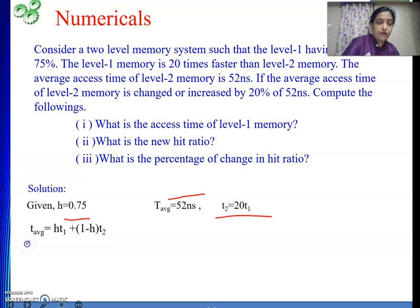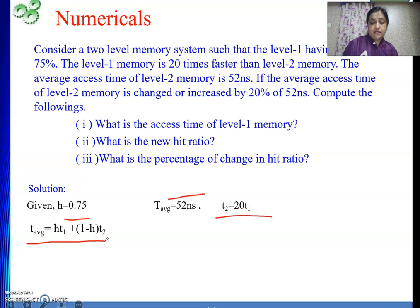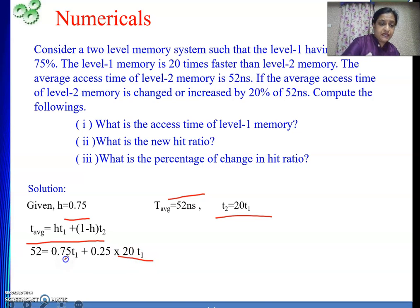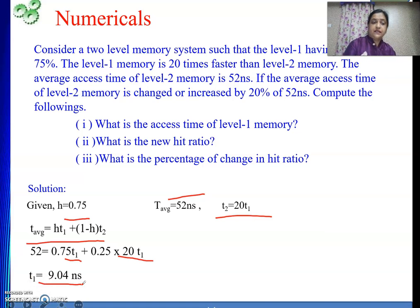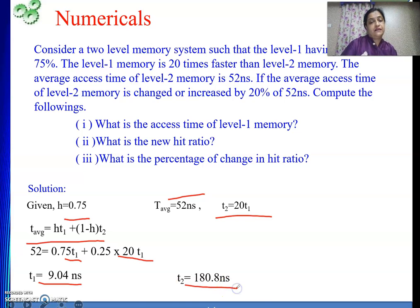We know that H is 0.75, T-average is 52 nanoseconds, and T2 is 20·T1. Using the average access time formula and substituting all the known values — with T2 equal to 20·T1 — only one unknown remains. Solving it, we get T1 equal to 9.04 nanoseconds. That is the level 1 access time. Level 2 access time is T2 equals 20·T1, which gives 180.8 nanoseconds. The first part of this question is done.